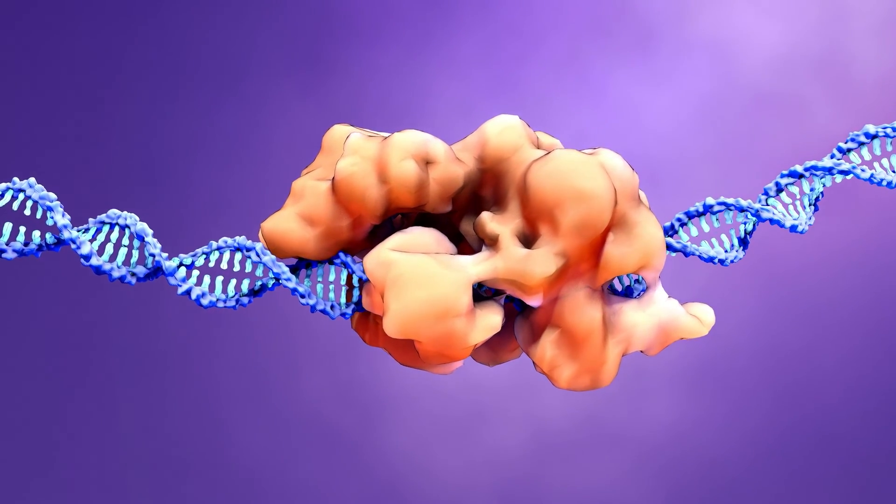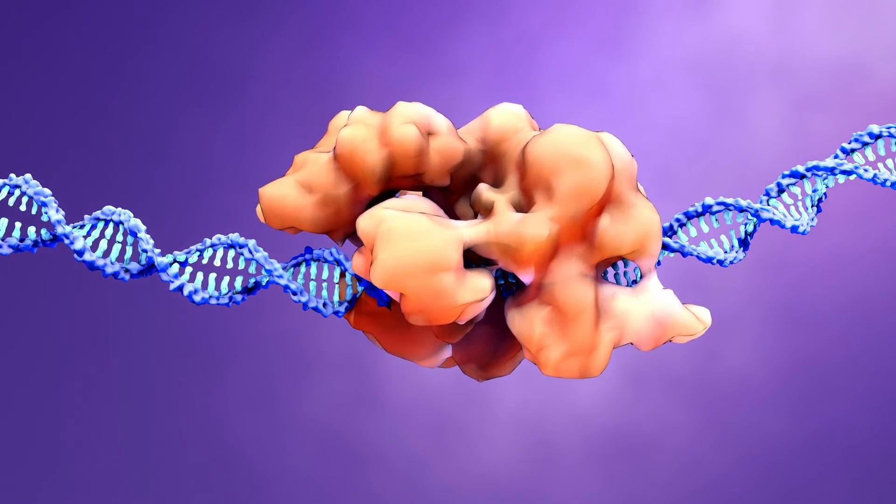The Cas9 enzyme acts as molecular scissors to cut the DNA precisely where it is mutated.